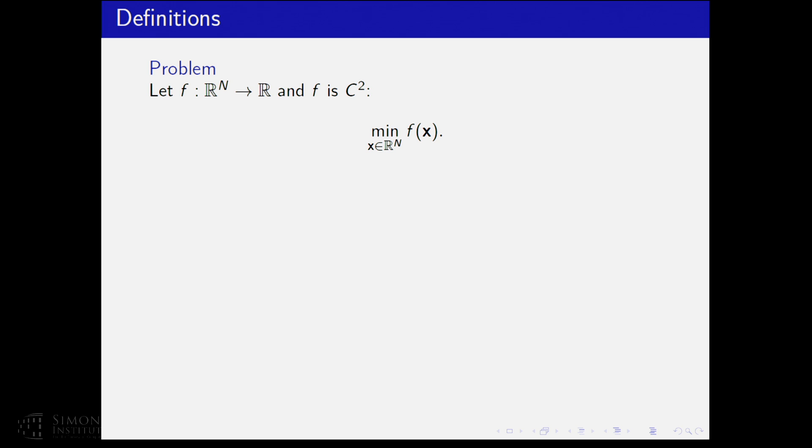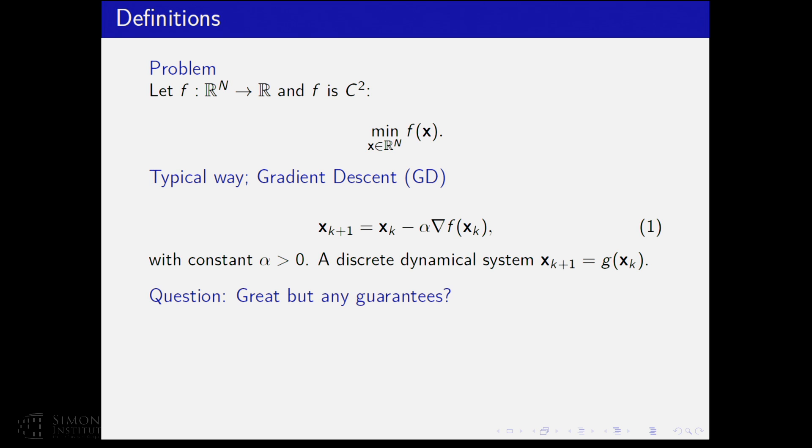So given a smooth function, you want to solve the unconstrained minimization problem. The typical way to go is to use gradient descent. The equations are here. Alpha is some constant that doesn't depend on your point x_k. And this is exactly a discrete time dynamical system.